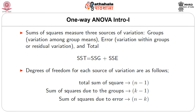Sums of squares measure 3 sources of variation: groups (variation among group means), error (variation within groups or residual variation), and total — where SST = SSG + SSE. Degrees of freedom for each source are: total sum of squares: n − 1; sum of squares due to groups: k − 1; sum of squares due to error: n − k.